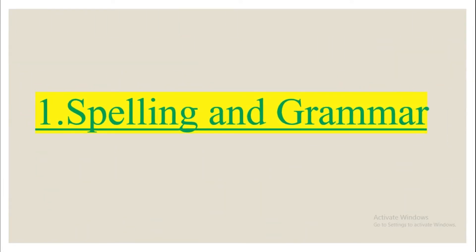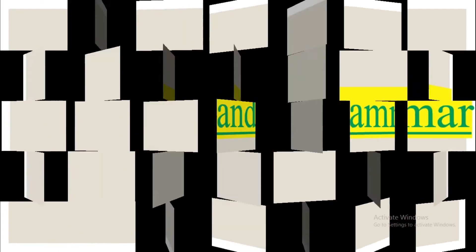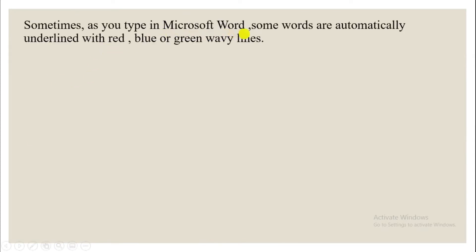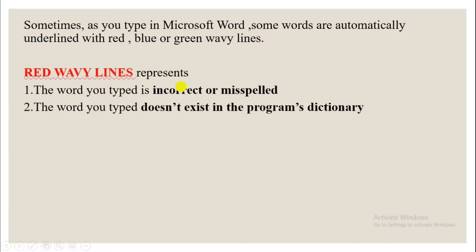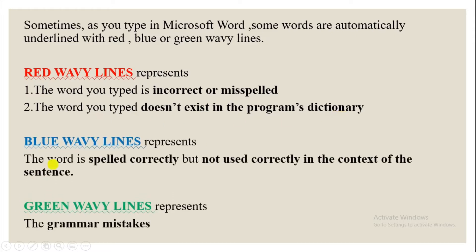Sometimes as you type in Microsoft Word, some words are automatically underlined with red, blue, or green wavy lines. Red wavy lines represent two things: first, the word you typed is incorrect or misspelled; second, the word you typed doesn't exist in the program's dictionary. Whenever you see a red wavy line, it means the word is either incorrect, misspelled, or not in the dictionary.